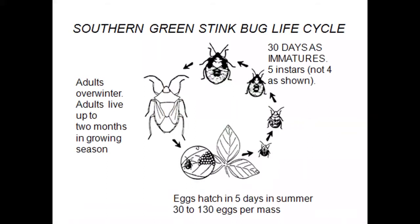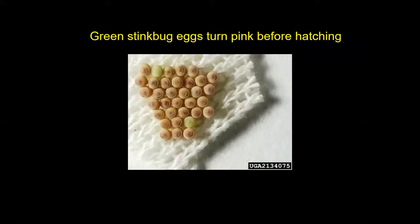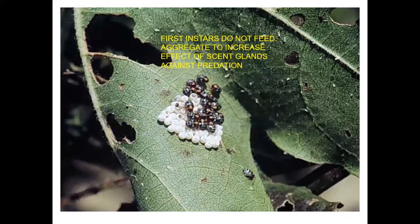Green stink bugs and other stink bugs are long-lived insects that can cause a lot of damage. Adults can live for two months, and the immature stage takes 30 days to go through five instars. Eggs hatch in summer in about five days, and there are a lot of eggs in the egg masses. Green stink bug eggs will start out green, and before they hatch they'll be a pinkish color. The immature stages tend to congregate together to maximize the benefit of the odor they produce, which protects them from predation.